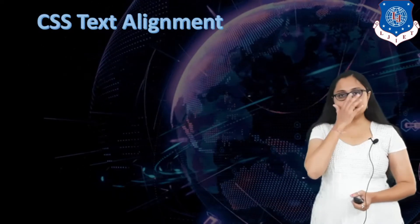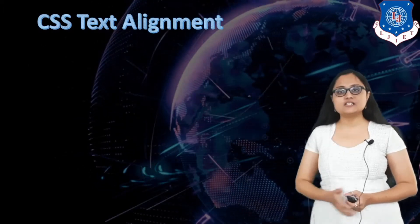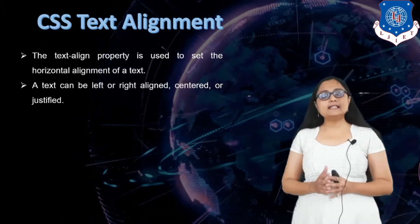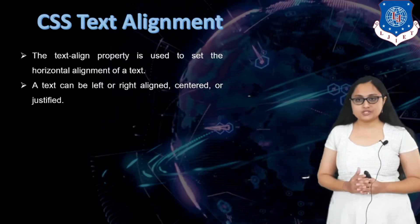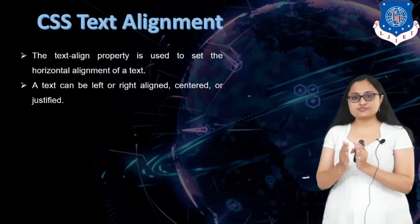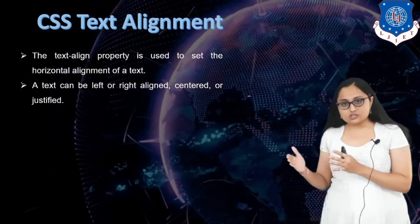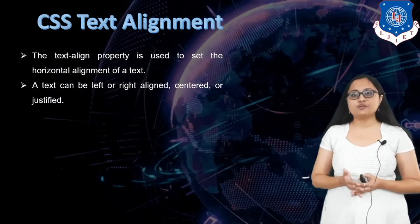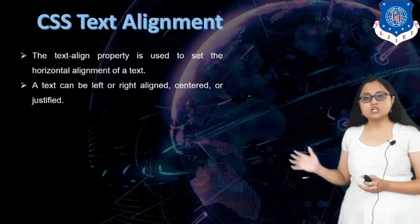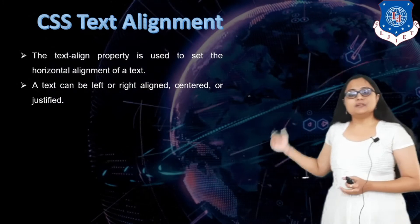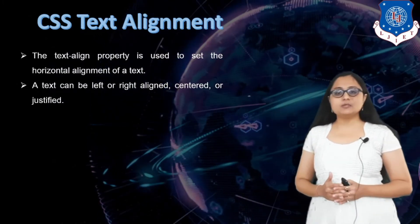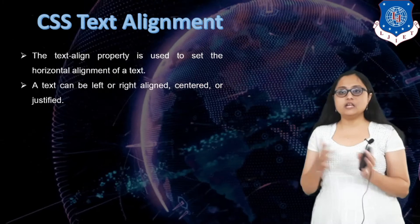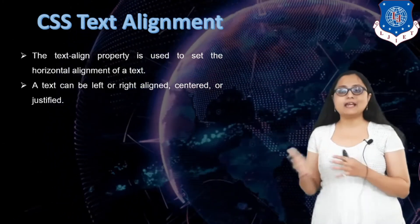The first text property that we are going to see is text alignment. Text alignment is a property which is used to set horizontal or vertical alignment of your text. A text can horizontally be aligned center, right, left, or it can be justified.